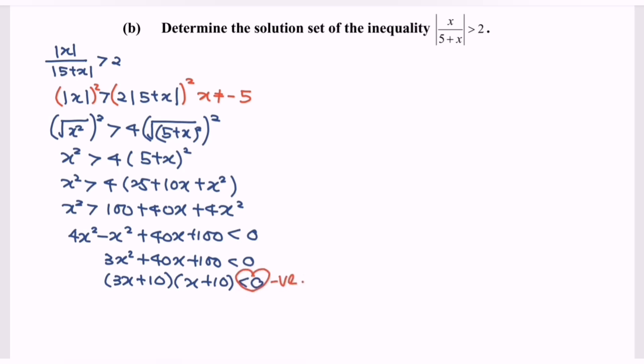Next, what we have to do is split the situation. Do remember, always assume positive. So 3x plus 10 greater than 0, x plus 10 greater than 0, and the restriction x cannot equal negative 5. Next we have x greater than negative 10 over 3, x greater than negative 10.